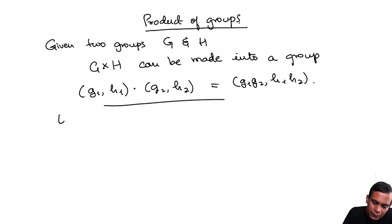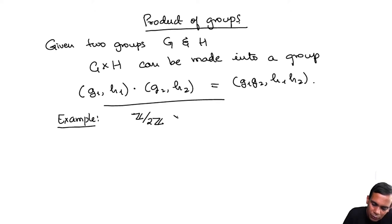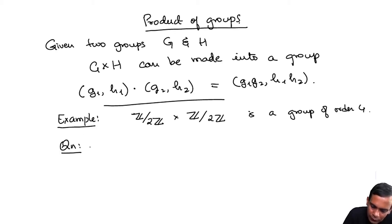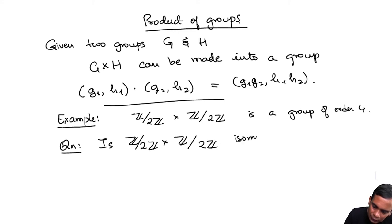Now let's look at an example. Let's look at Z mod 2Z cross Z mod 2Z. What is the size of this group? This is a group of order 4, and here is a question: is Z mod 2Z cross Z mod 2Z isomorphic to Z mod 4Z? That's another group of order 4.